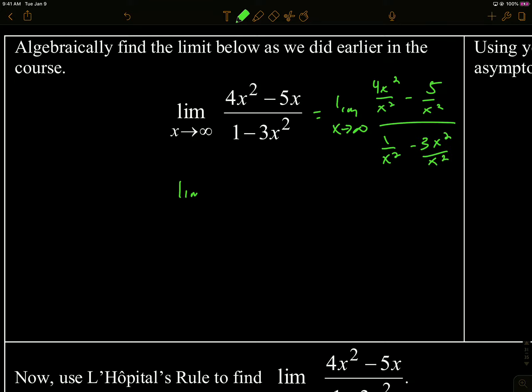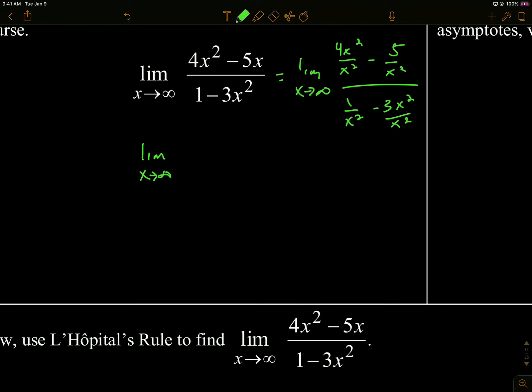So if I divided everything by the highest power of x in the denominator and then simplify, what do we get? Up there we have 4 minus 5 over x squared over 1 over x squared minus 3. So if I plug infinity in here, I end up getting negative 4 thirds, because when I plug infinity to this, it goes to zero, this goes to zero, so it was negative 4 thirds.